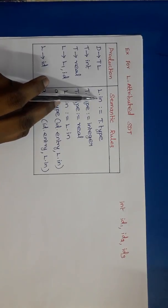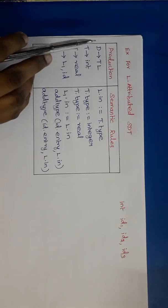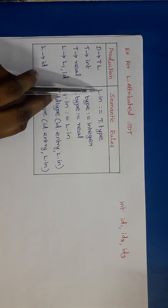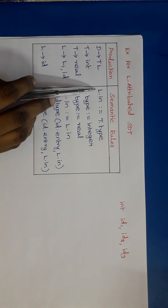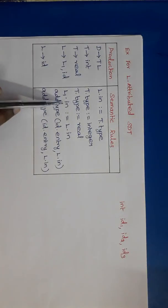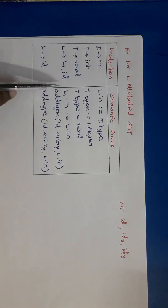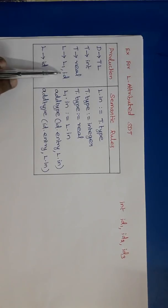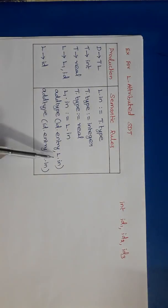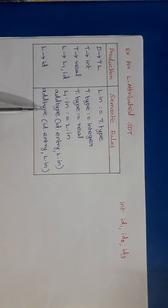L is an inherited attribute, so its value can be taken from the parent or sibling. L.in means the type information for L — L.in is taken from T, so T.type is assigned to L.in. T.type is integer or real. For L tends to L comma ID: L1.in = L.in (taken from parent), and add_type(ID.entry, L.in) enters the type for the identifier into the symbol table.